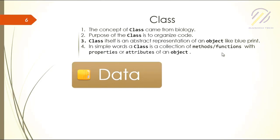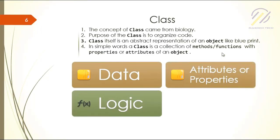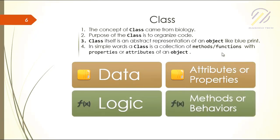A class should have two layers. One is data, another is logic. Data layer is also known as attributes or properties, and logic is also known as functions, methods, or behaviors.